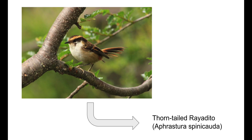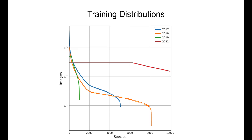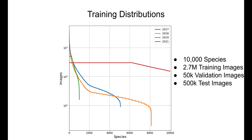The task this year was still species classification, so given an image, competitors were tasked with identifying the species present. Compared to previous competitions, the 2021 dataset has increased both the number of species and the number of training images. This year, the dataset has 10,000 species with 2.7 million training images, where the distribution across species is fairly uniform.